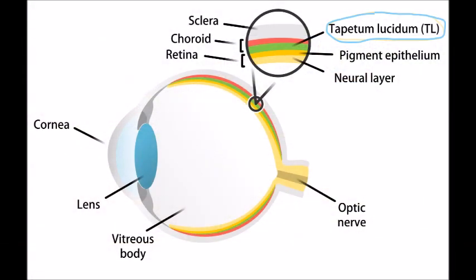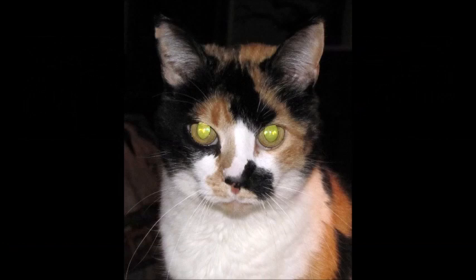Last but not least, cats possess a structure called the tapetum lucidum, which humans do not. This structure is located directly behind the retina. The tapetum allows light to reflect back into the retina again, which increases the amount of light in the photoreceptors and further improves a cat's ability to see in dim light. The reflective nature of the tapetum is also what causes cats' eyes to flash a bright yellow or green in photographs.